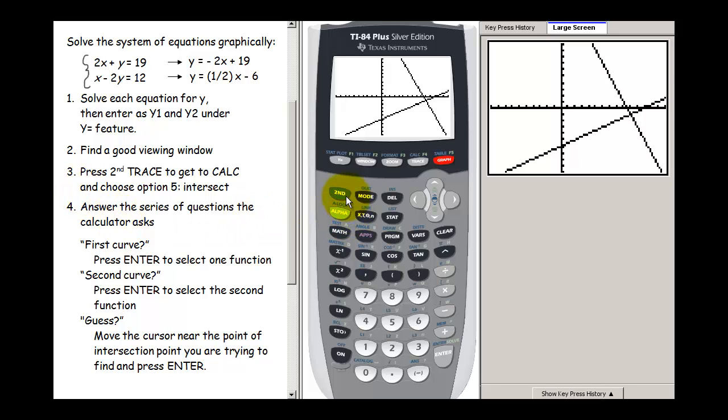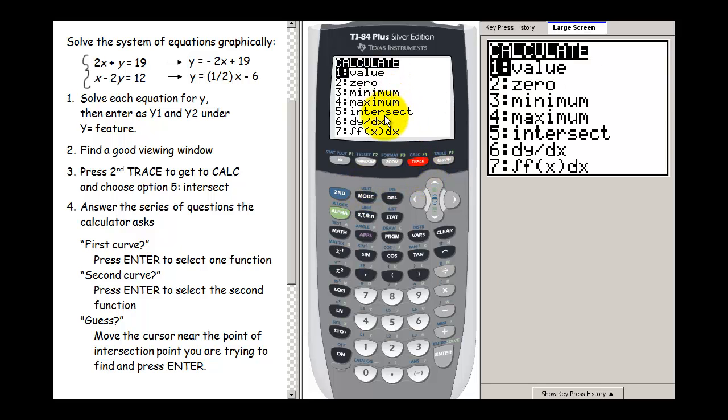So the next thing to do is to get to the calc menu, press second trace, and we are going to choose the intersection option. So we're going to go down here to 5 or you can just press 5 on your keypad here.